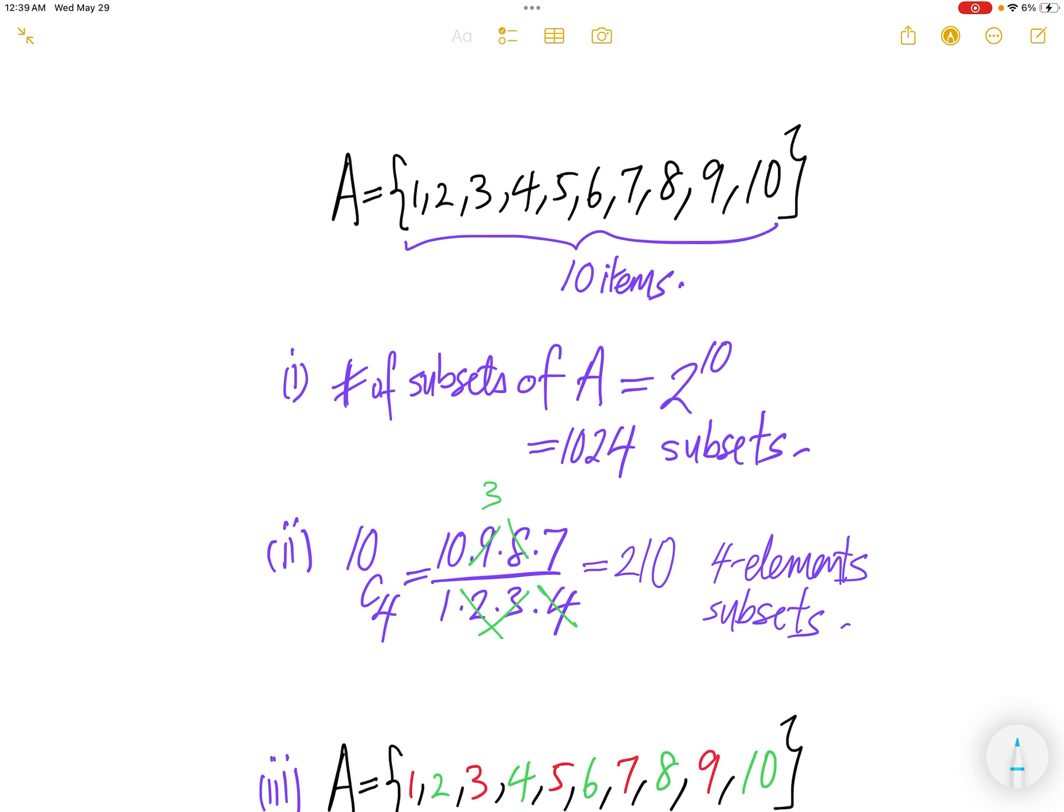Let's do part 1. Part 1, there are 10 elements. Number of subsets of A is equal to 2 to the power of 10, i.e. 1024 subsets.